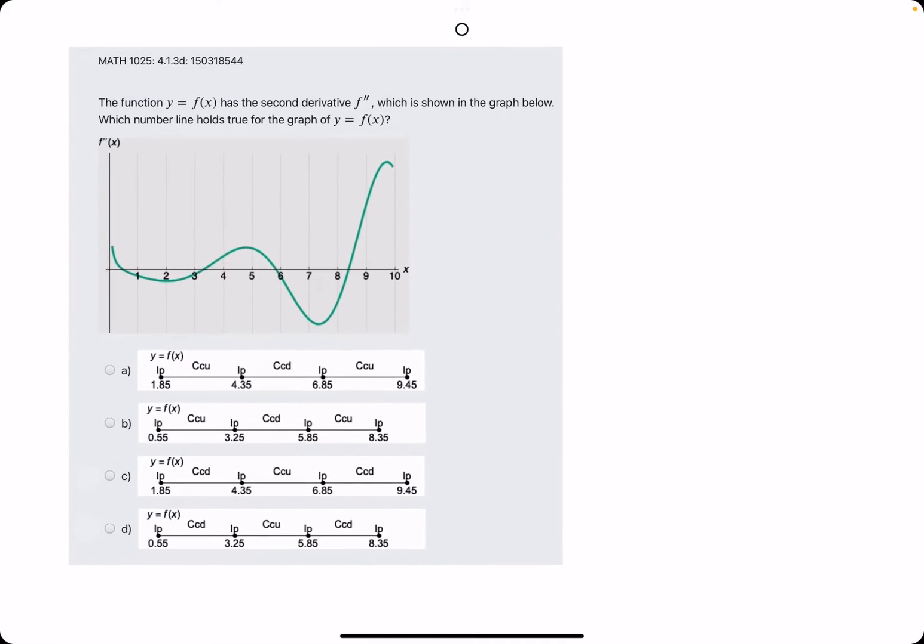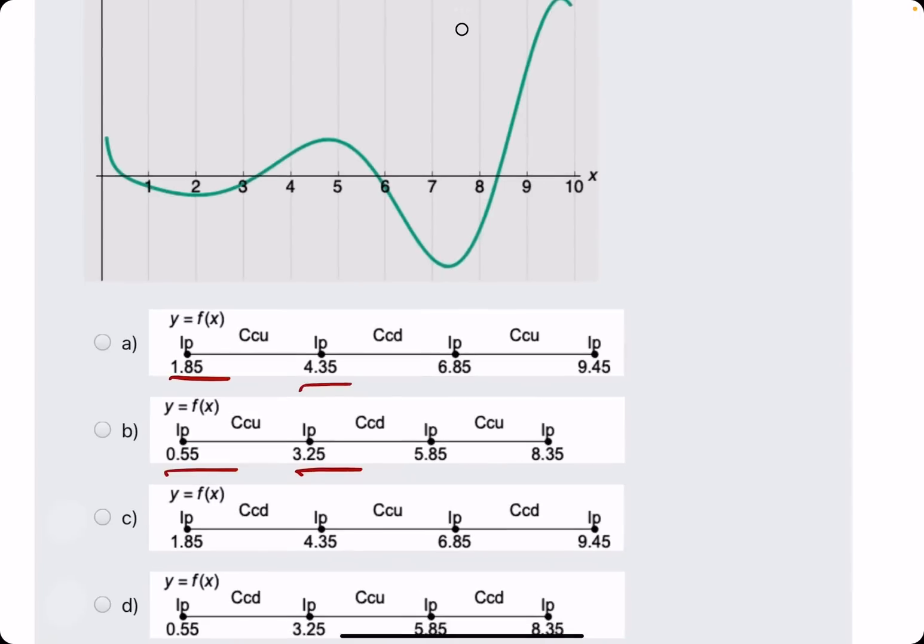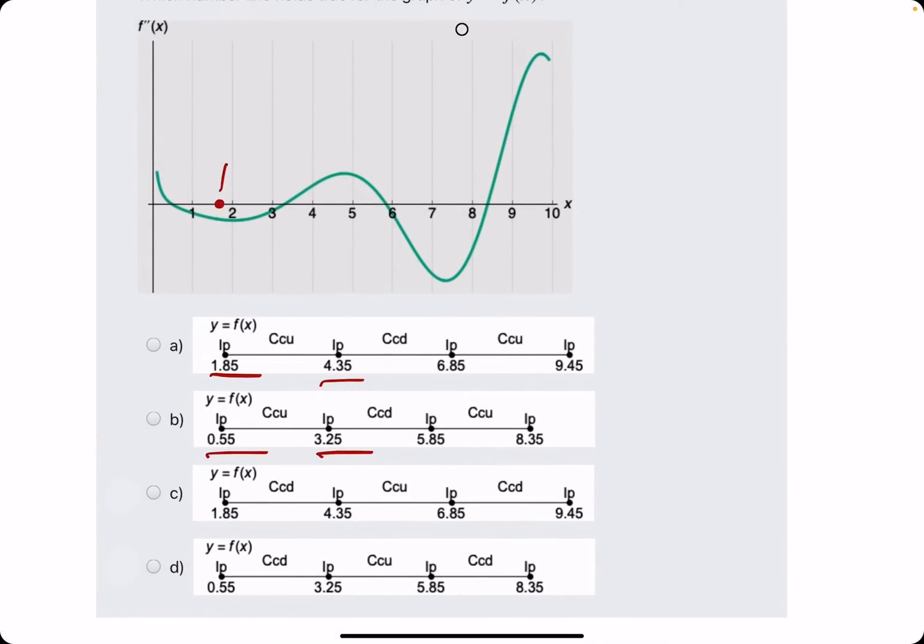So the short version: we identify the x-intercepts to help us identify these correct values down here.